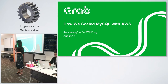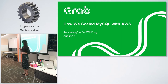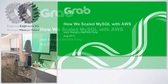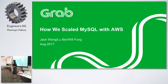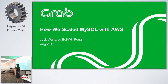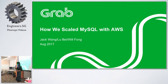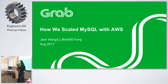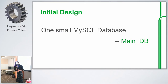My name is Lupe, database engineer at Grab. Today it's a great honor to be here to have this talk with you. Our topic today is how we scale MySQL with AWS. We'll go through the different phases of our database infrastructure, as well as the challenges and issues we met at each phase, and the corresponding optimizations for better database performance. I'll start with our initial design.